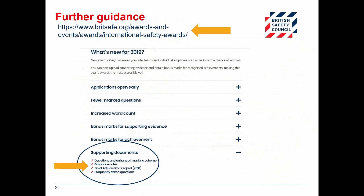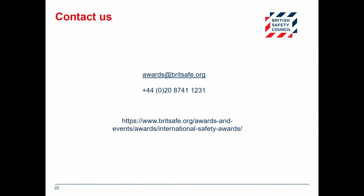Additional supporting documents are available on our website at www.britsafe.org/ISA. The adjudicators have noted that applicants who fail to study these materials are significantly less likely to submit a successful application. We want you to succeed and we're here to help — email us at awards@britsafe.org, call us on +44 020 8741 1231, or find out more at www.britsafe.org/ISA.